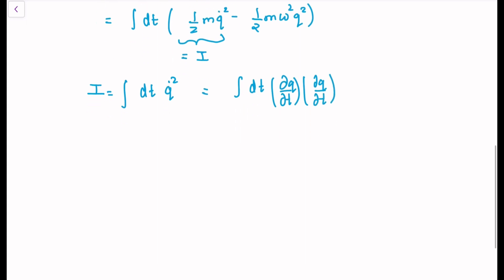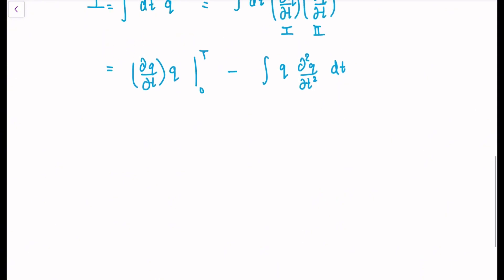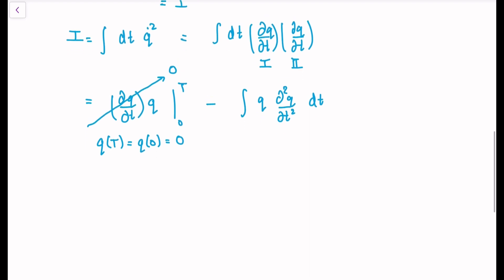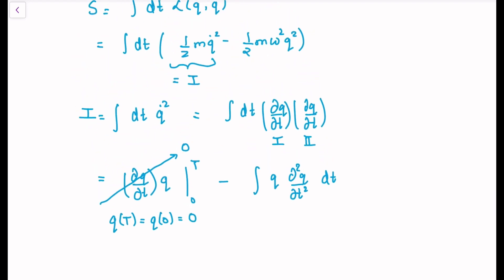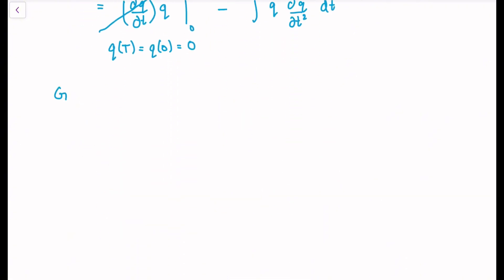We can write q-dot squared as a product of two q-dots, then employ integration by parts: first function times integral of second, evaluated from zero to T, minus the integral of the derivative of the first times the integral of the second. The boundary term — q-dot times q evaluated from zero to T — vanishes because q equals zero at both endpoints. So only the second term survives, and we can rewrite the propagator in a new form.